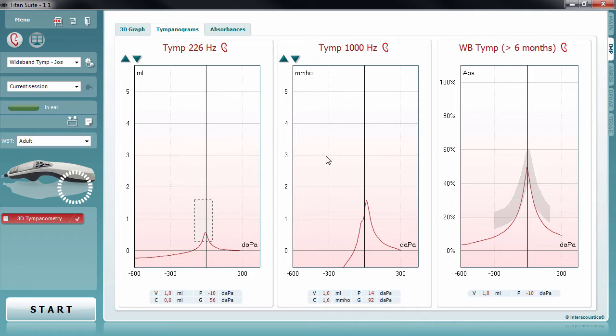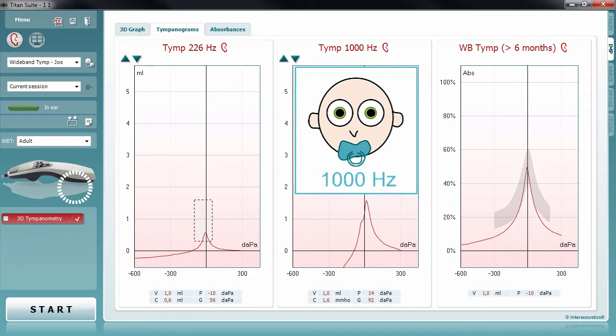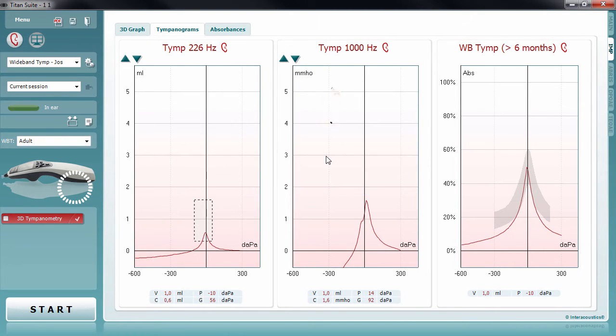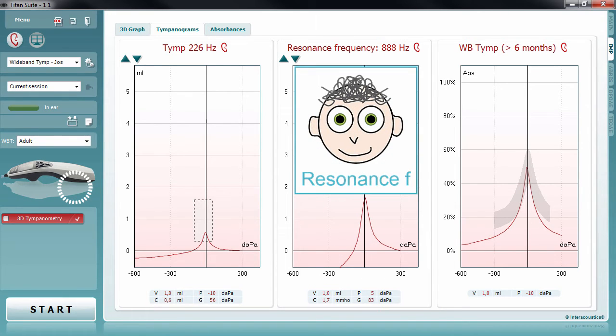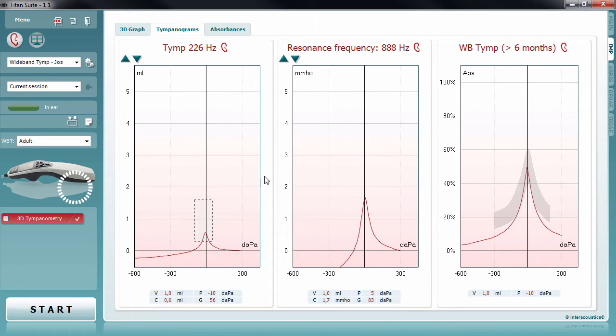In its default view, the tympanograms tab displays 3 tympanograms. Those which are displayed are dependent on the age of the patient. However, as the user, you can easily switch between multiple tympanograms by right-clicking on any tympanogram displayed and selecting the desired tympanogram you wish to see. Let's look at the example from an adult patient.